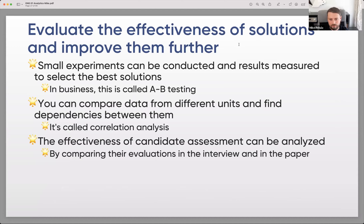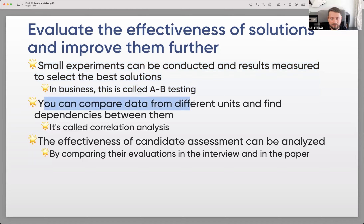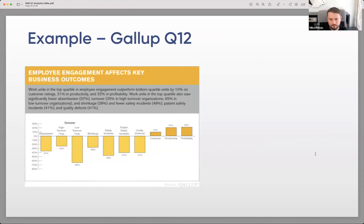Small experiments can be conducted and results measured to select the best solutions — in business this is called A/B testing. We can apply different evaluation tools and analyze which helps forecast employee performance better. You can compare data from different units and find dependencies — that's correlation analysis. For example, Gallup's famous Q12 questionnaire about employee engagement is built on correlation analysis of which work factors correlate with employee performance.